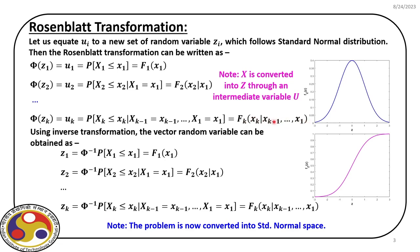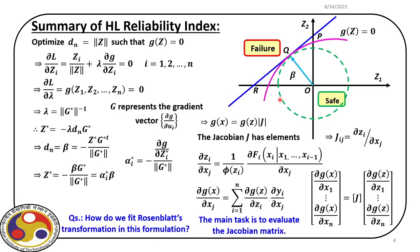Applying inverse transformation, Z1 equals capital Phi inverse of capital F1(X1), which correlates Z1 with X1. We start with the X space and convert it into Z space — the standard normal space — through conditional probability. That is what Rosenblatt transformation is.